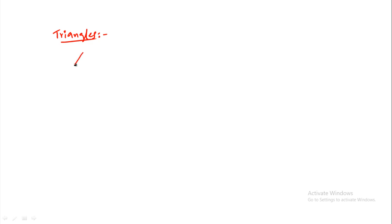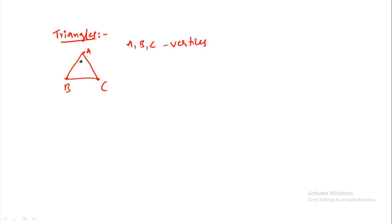A triangle has three points, every point joined by three lines — for example A, B, C. The sides are AB, BC, CA, and the angles are angle A, angle B, angle C.